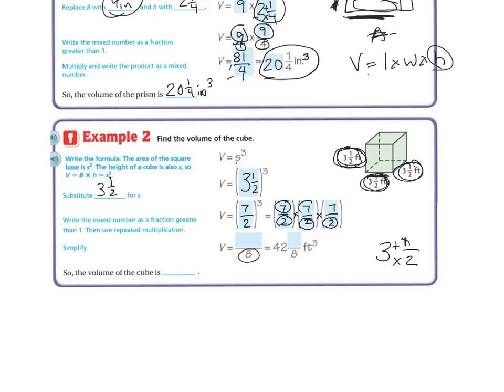And on the top, I get 7 times 7, which is 49. And 49 times 7 is 343. Now I want to try and make it be a mixed number and not an improper fraction.